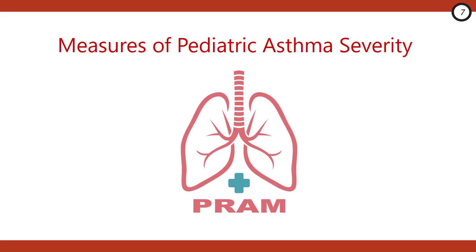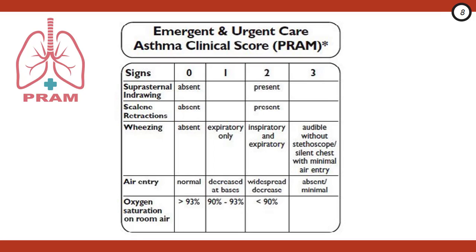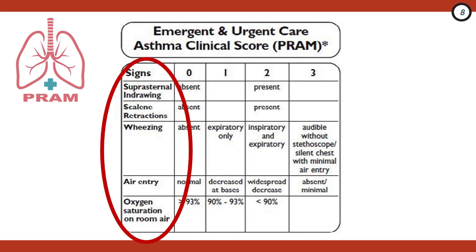Trying to assess these little guys in a reliable manner can be pretty difficult when you're running a busy ER. But fortunately, there are several validated clinical decision tools available that can help us define the severity of exacerbation. The PRAM — the Pediatric Respiratory Assessment Measure — is one such tool that's often used. It utilizes specific clinical exam findings like the presence of in-drawing, the presence of wheeze, and the patient's oxygen saturation to develop a severity classification ranging from mild to impending respiratory failure, which we can then use to guide our level of interventions for the patient.